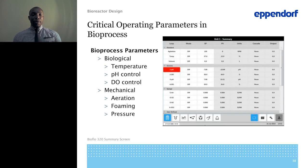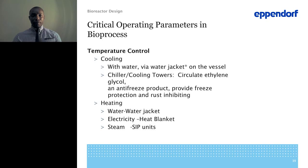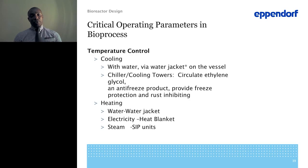Typical bioprocess parameters for biological systems include temperature, pH, and DO; and mechanical parameters such as aeration, foaming, and pressure. Temperature control can be done via a water-jacketed vessel using a chiller to circulate ethylene glycol or glycerol — an antifreeze product — to provide freeze protection and rust inhibiting within the cooling device. Heating can be supplied using a water-jacketed vessel, electricity through a heating blanket, or steam for in-place bioreactors.